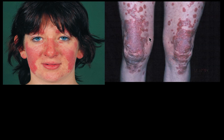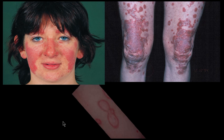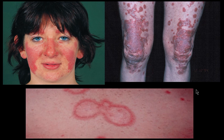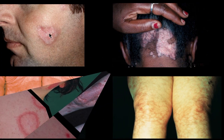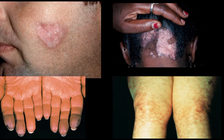Here you can see the butterfly rash, where the nasolabial folds are spared. This is subacute rash involving the anterior aspect of both knee joints and also part of the thigh and leg. This is discoid rash — this is discoid rash on the face.